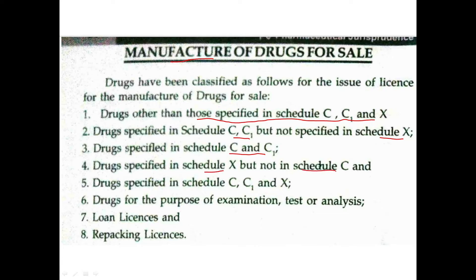Schedule X is another category. Then Schedule C, C1, and X together. Then other than C, C1, and X. These are the different categories for manufacturing licenses. There are a lot of drugs in the same way.